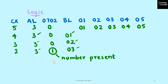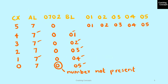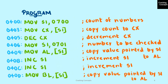When a match is found on comparison, the value at 0702 is modified to 1, which indicates that the number is present in the series. For the case where the number is not present, the same comparison steps are performed — CX is decremented by 1 each iteration, AL holds the search value, and BL holds each value in the series. Comparison is performed until CX is 0, and since none match, the value at 0702 remains 0, meaning the number is not present.